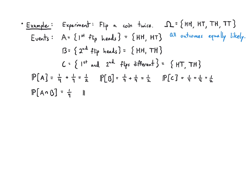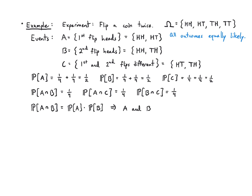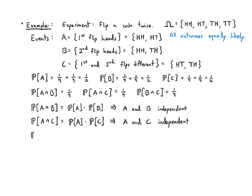A∩B = {HH}, so P(A∩B) = 1/4 = (1/2)(1/2) = P(A)·P(B), so A and B are independent. A∩C = {HT}, so P(A∩C) = 1/4 = P(A)·P(C), so A and C are independent. B∩C = {TH}, so P(B∩C) = 1/4 = P(B)·P(C), so B and C are independent. All pairwise combinations satisfy the independence condition.